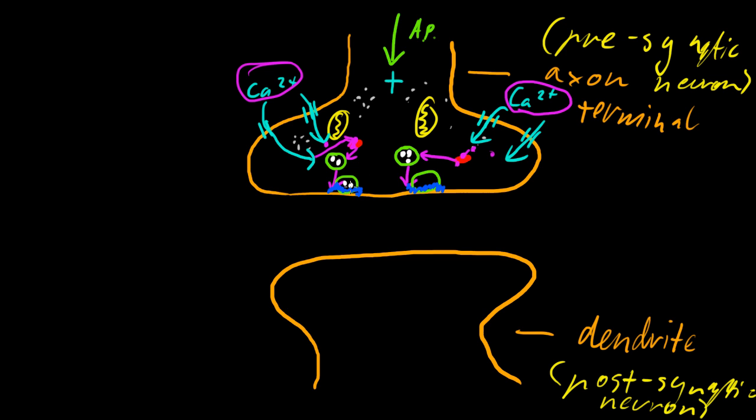So we've got these vesicles, these synaptic vesicles containing neurotransmitter, which has been built by the precursors in the axon terminal of the presynaptic neuron. The action potential has come. It's brought calcium in. And that's caused synaptotagmin proteins here to interact with vesicles, to cause them to be docked on the SNARE proteins here in the active zone.